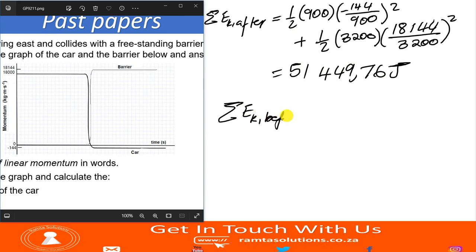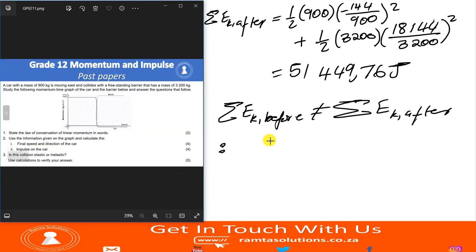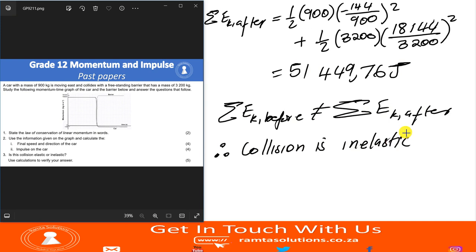The total kinetic energy before collision, 180,000 joules, is not equal to the total kinetic energy after collision, approximately 51,449.76 joules. Therefore, the collision is inelastic. This is how you attempt these questions — I hope you guys enjoyed this, and see you next time. Bye-bye.